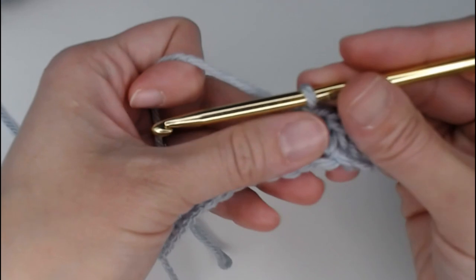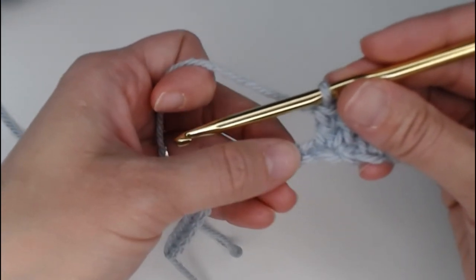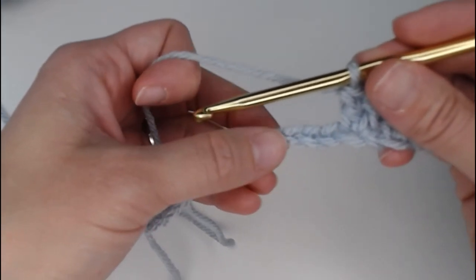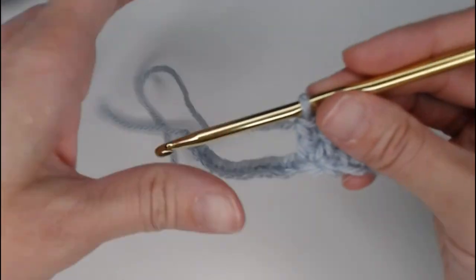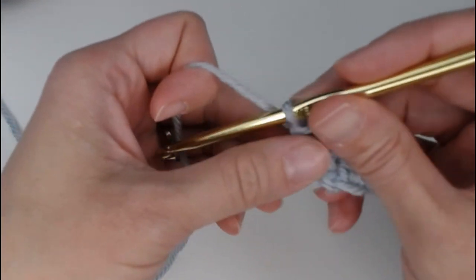Until then, go ahead and continue working this skip 1, 2 double crochet, skip 1, 2 double crochet pattern all the way to the end of your foundation row chain.